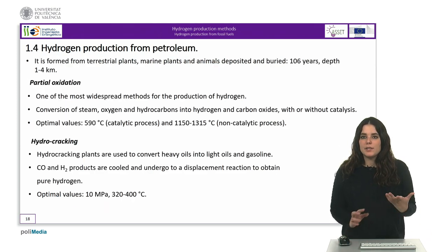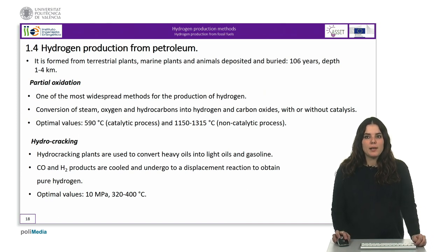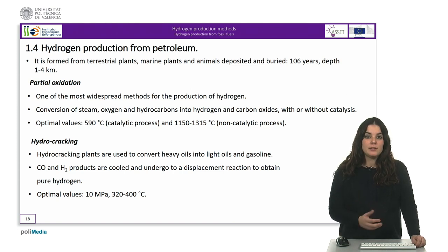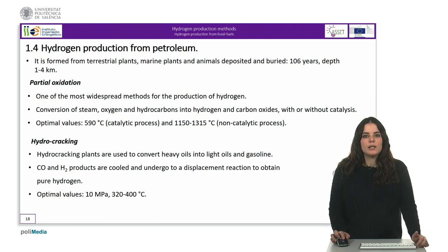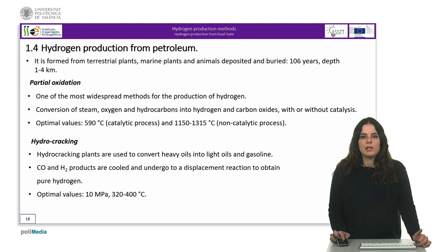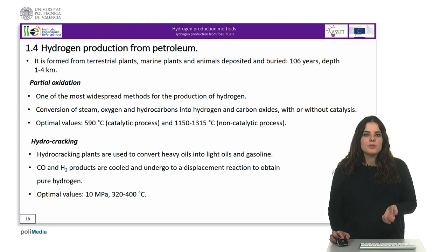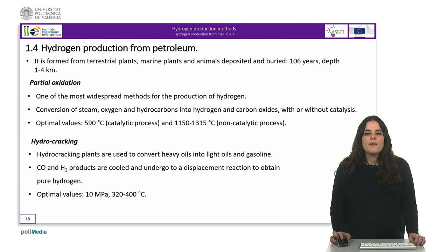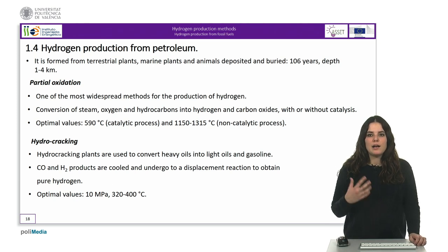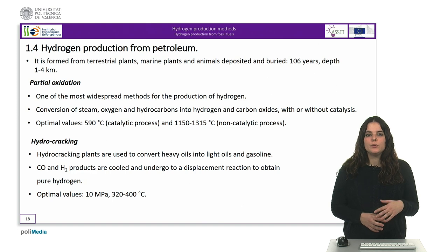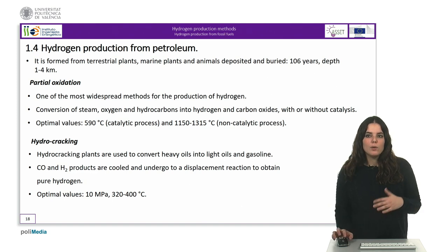We will now explain how hydrogen can be formed from petroleum. Petroleum is formed from terrestrial plants, marine plants and animals in a marine environment, deposited and buried over 10^6 years at depths between 1 and 4 kilometers. Marine plants and animals have a higher content of nitrogenous and sulfurous compounds, and therefore petroleum can have a higher proportion of these elements compared to coal and natural gas.